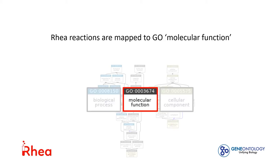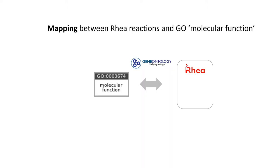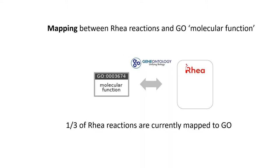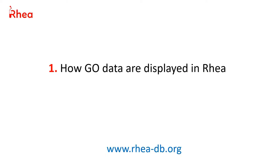RIA reactions are mapped to terms from the GO category molecular function. The mapping is maintained by the GO consortium. About one-third of the RIA reactions are currently mapped to GO, and making the links is an ongoing process.